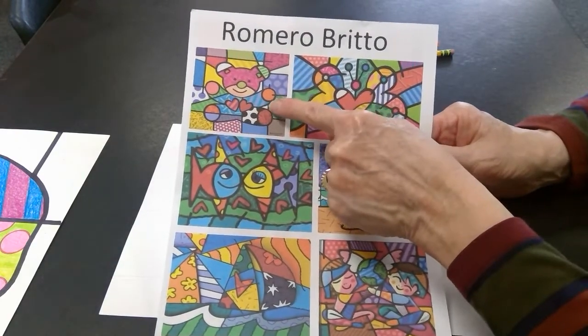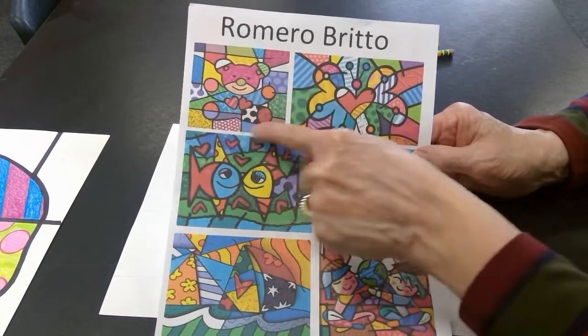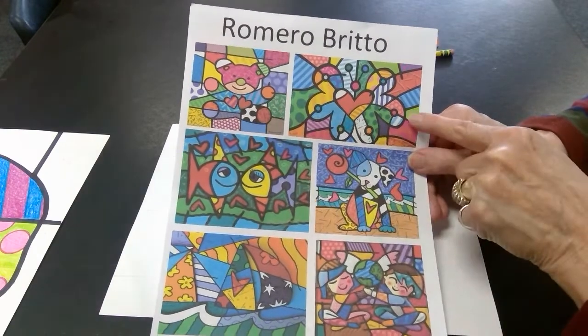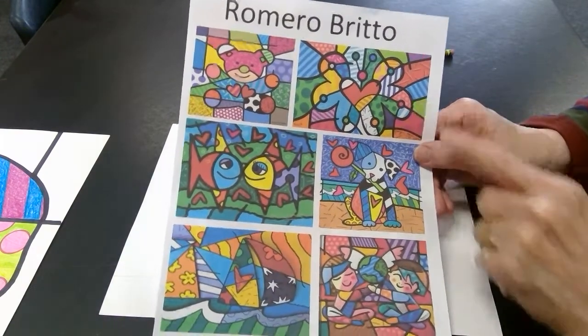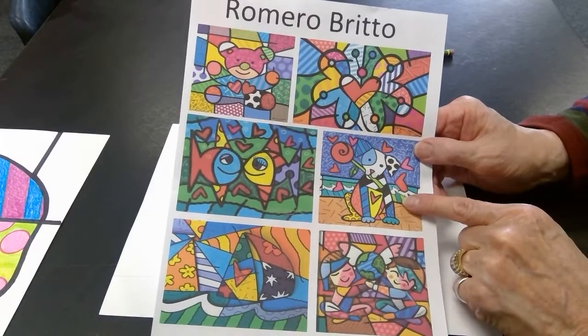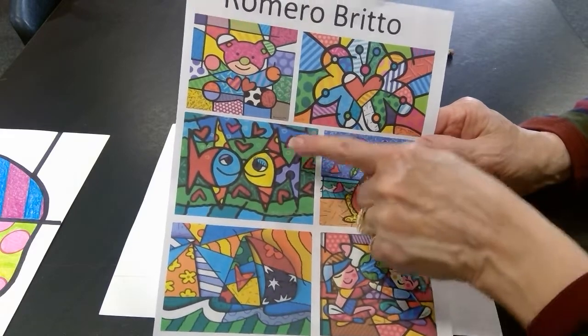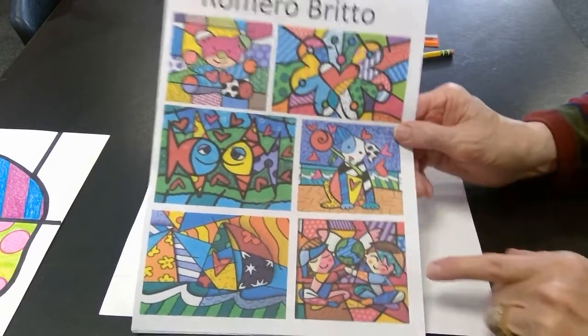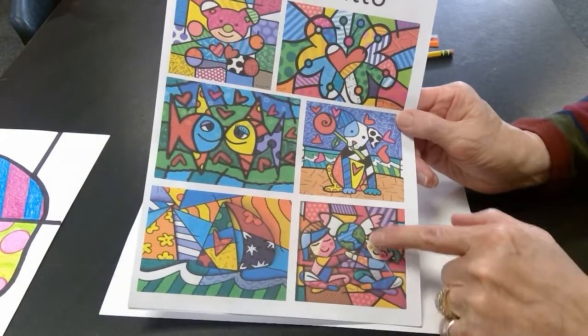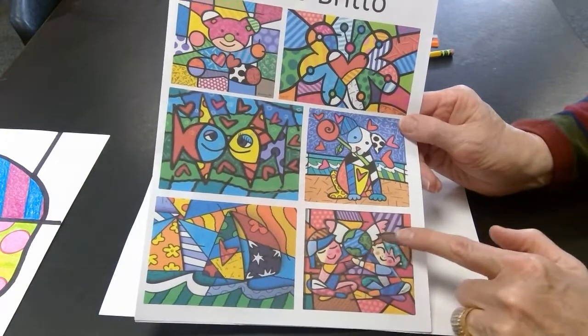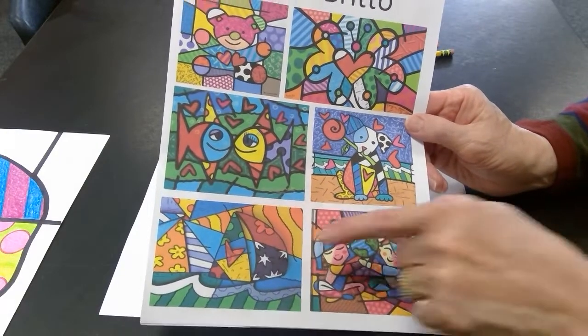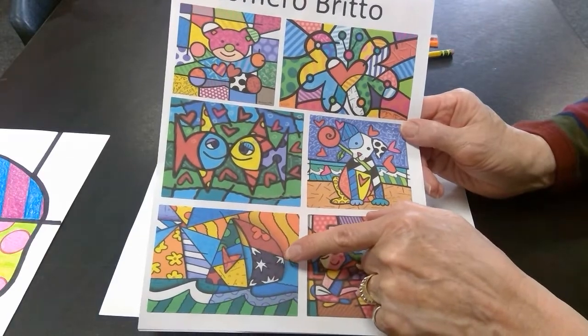Here's one of a teddy bear. Notice all the patterns and the black lines. Here's a heart with wings. Here's a cute dog. Notice all the different patterns around. There's a lot of hearts and shapes. Here's a couple of fish. Here's a little girl and boy holding the earth with lots of patterns around them. Here's a sailboat in the ocean.